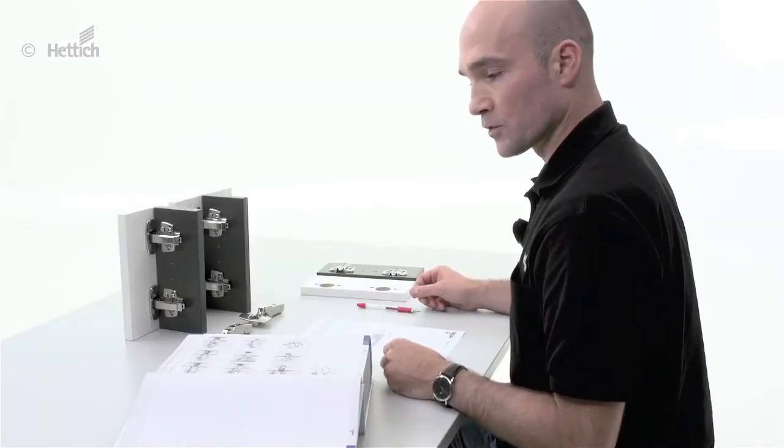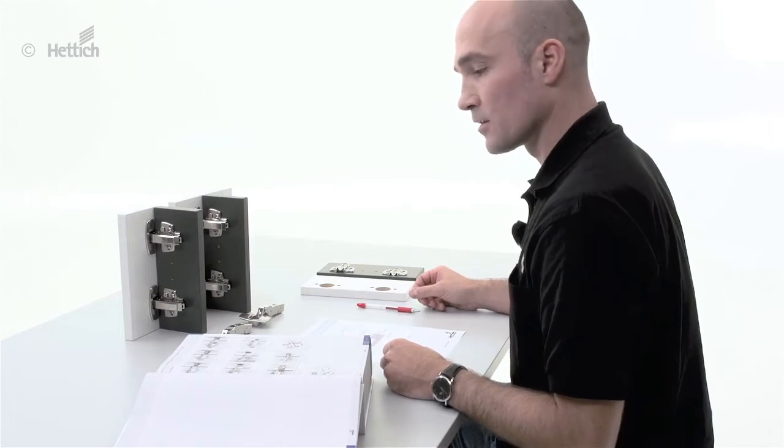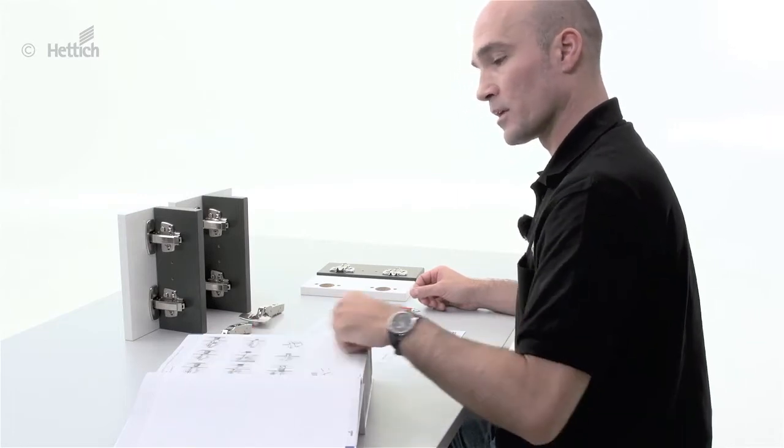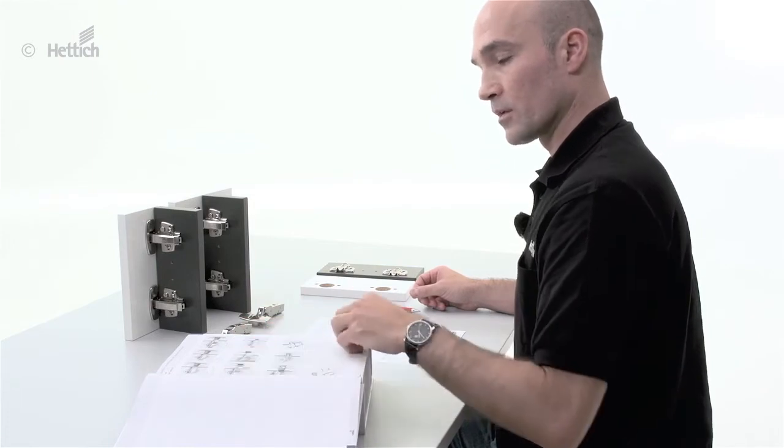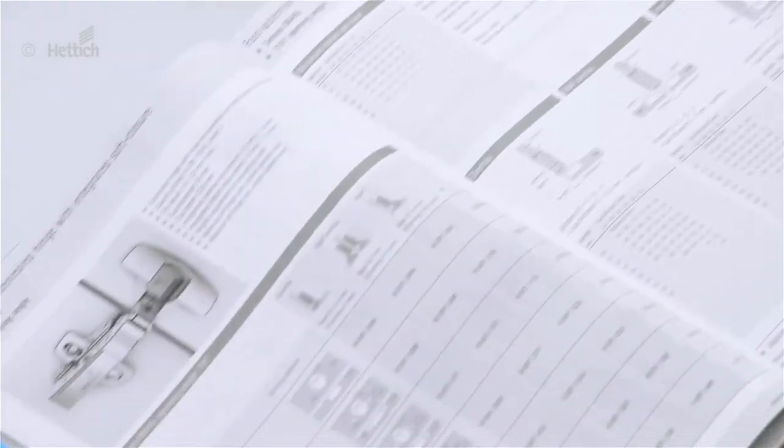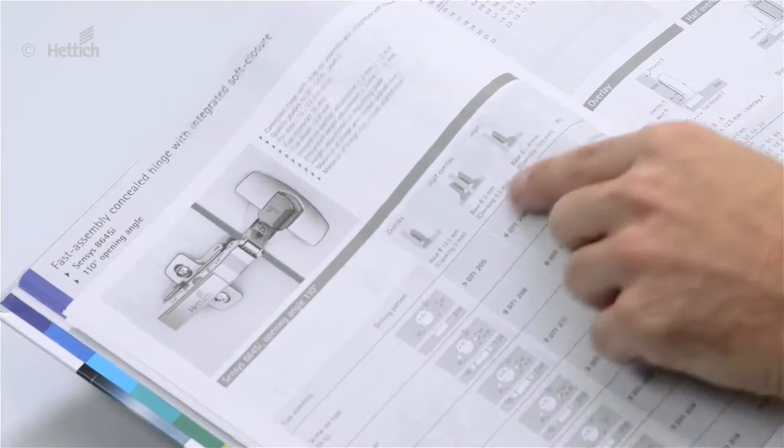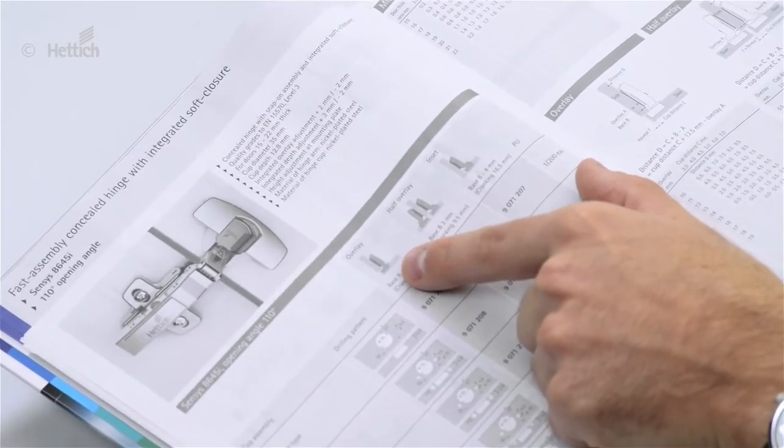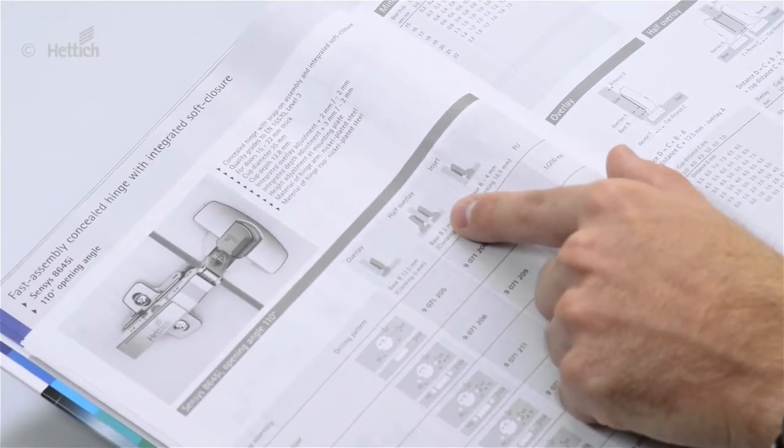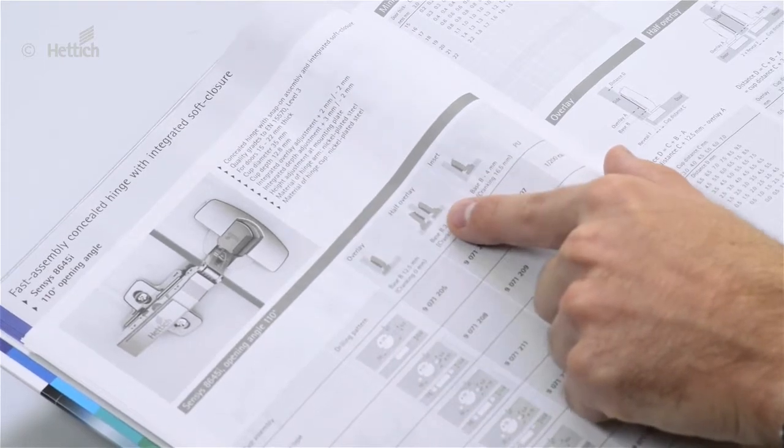In this step, we want to demonstrate how to calculate a standard full overlay application. Therefore, we go to the catalog page and we see there are two different types of overlay applications: full overlay and half overlay application.